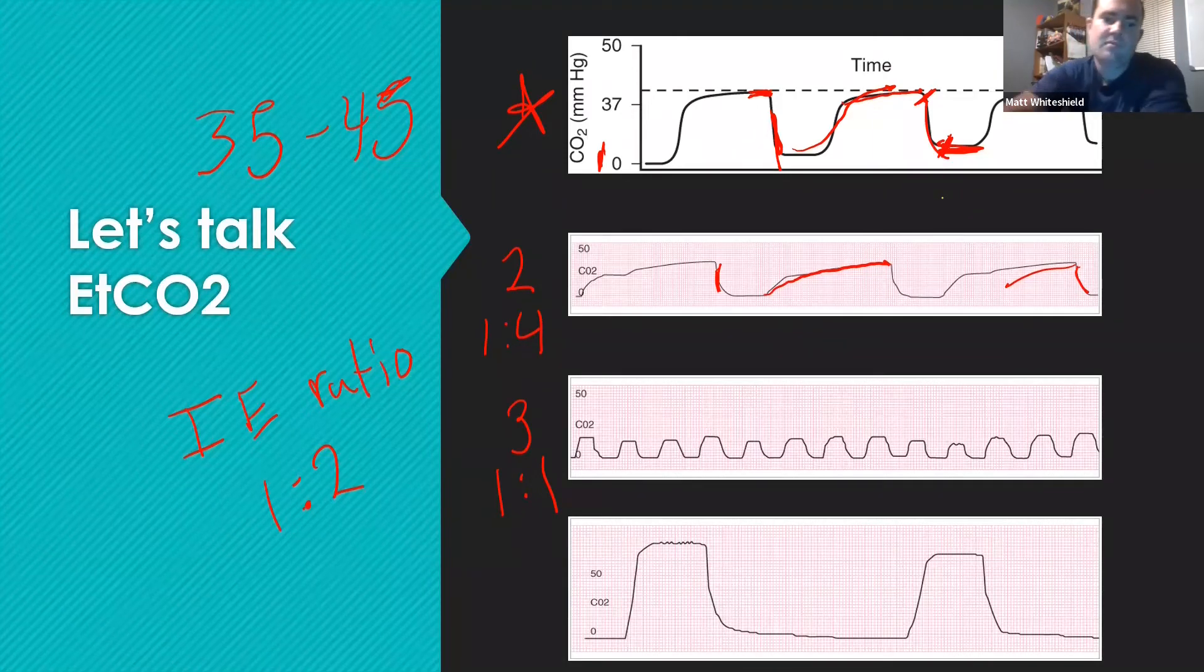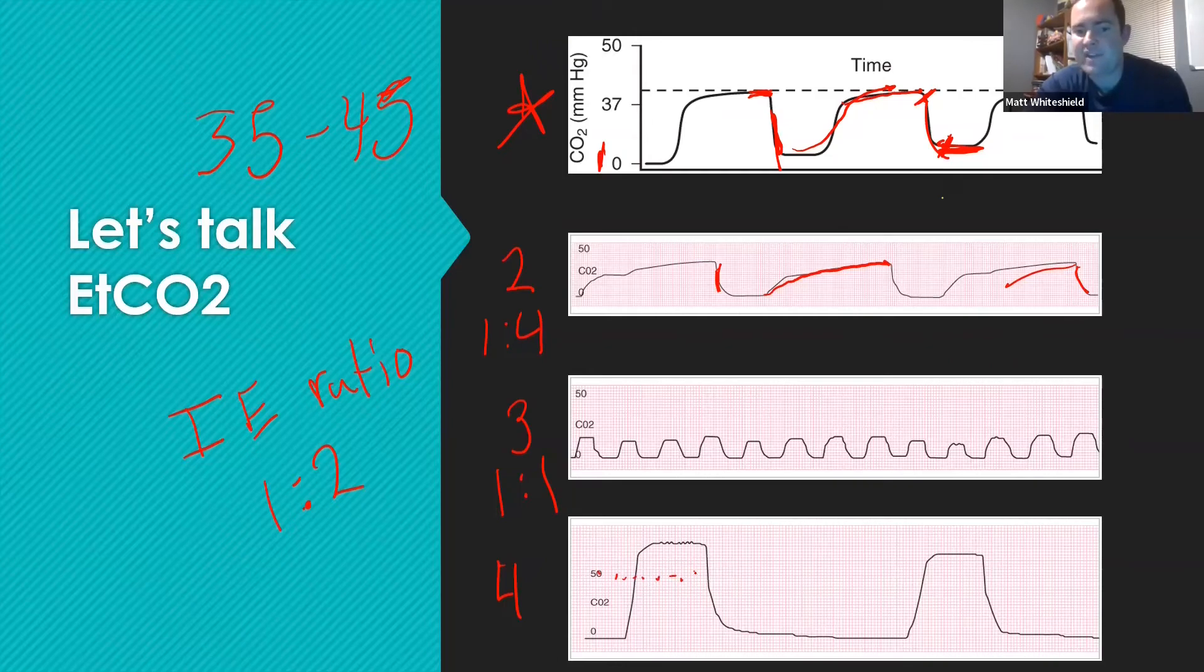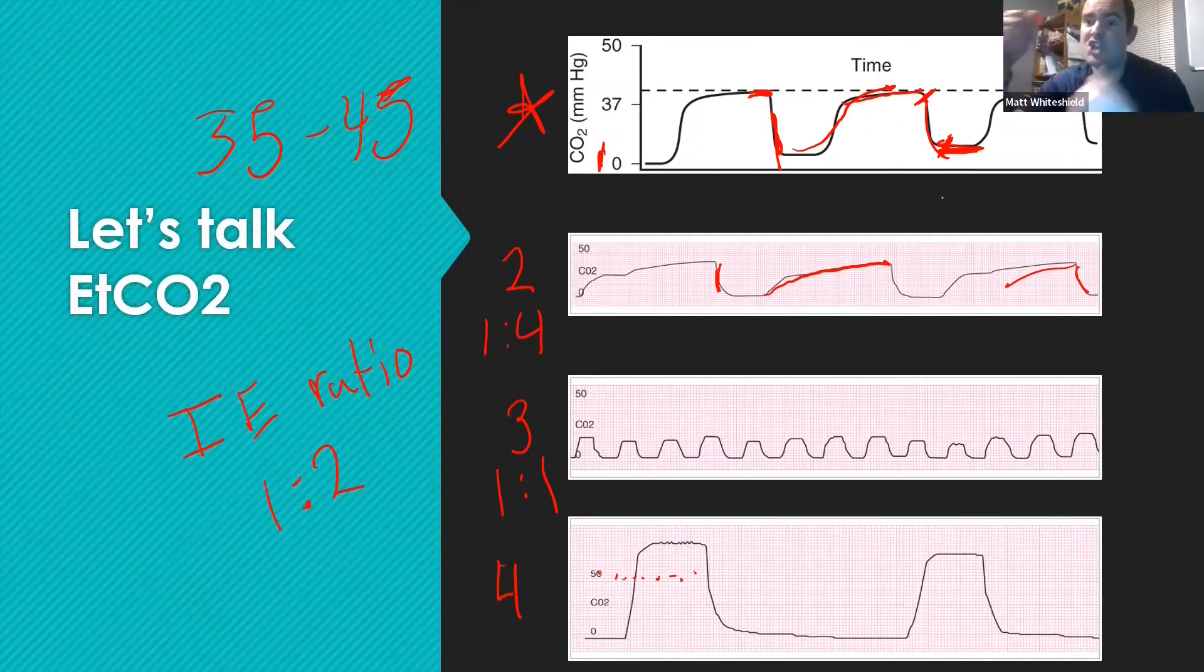This last one down here, number four, we have a patient that has extremely high end-tidal capnography. If you see 50 should be right here, this patient's end-tidal capnography is like 70. What can cause high end-tidal capnographies? Hypoventilation. And obviously in this one in particular, bradypnea. This patient is not only breathing slowly, but not breathing enough. They're breathing shallow, slow and shallow. You can tell by this end-tidal capnography, you would have to bag this patient to get their end-tidal back to normal.